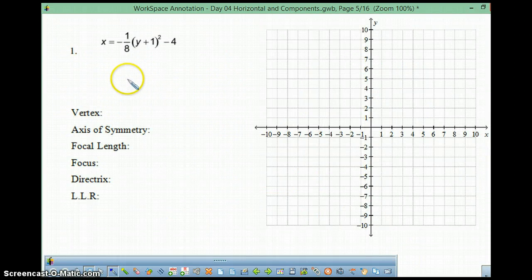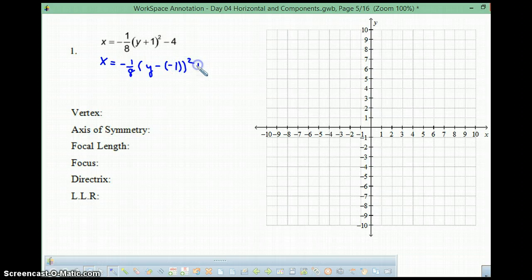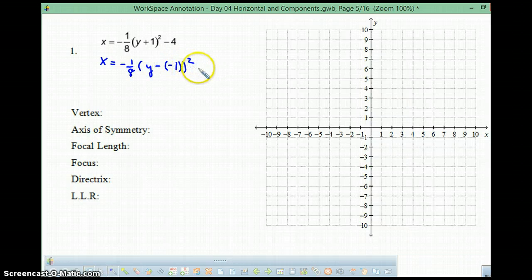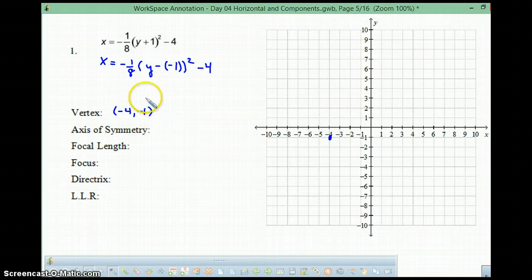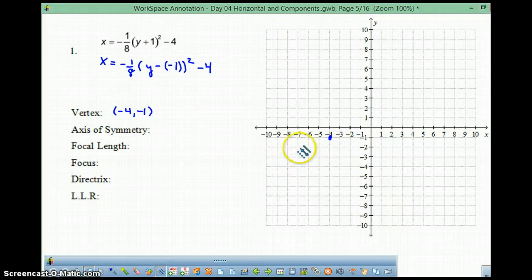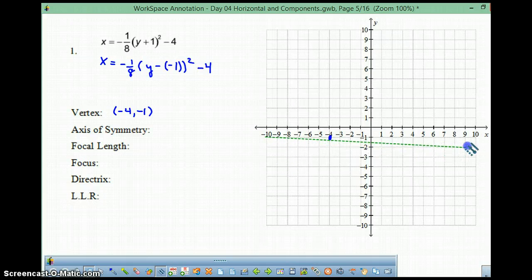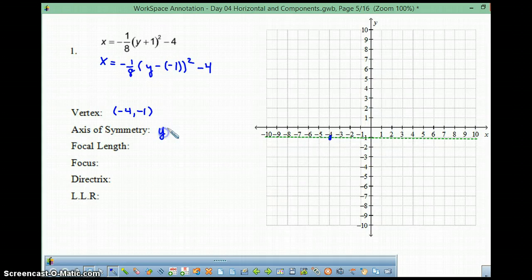All right, so let's do a couple more practices here. We've got an equation in vertex form already. Almost in vertex form, sorry. This should turn to x equals negative 1 eighth times (y minus negative 1) squared minus 4. We've got a vertex. Your vertex is going to be (-4, -1). Right here. What's the axis of symmetry? Well, I know that this is going to be a horizontal parabola. This is the axis of symmetry. It's going to go right down the middle. I haven't really talked about whether it's opening right or left, but I know the axis of symmetry is going to be right there. So, the axis of symmetry is going to be y equals negative 1.